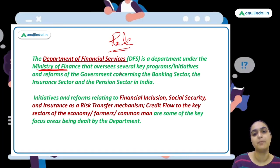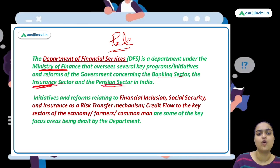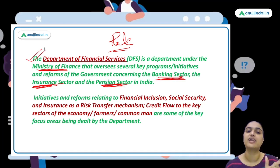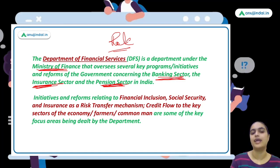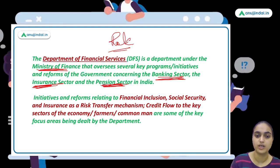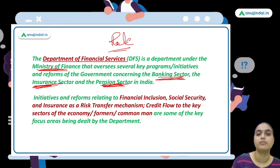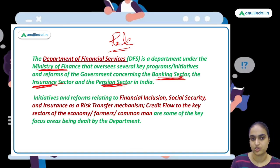The Department of Financial Services oversees various programs, reforms, and initiatives of the government related to the banking, insurance, and pension sectors in India. Its focus areas include financial inclusion, social security, insurance, and ensuring credit flow to the economy, farmers, and the common man.